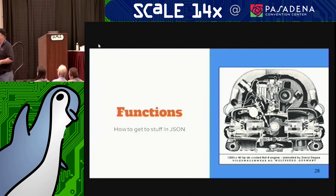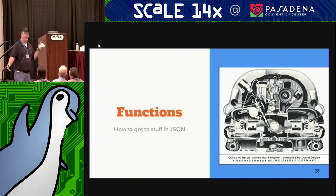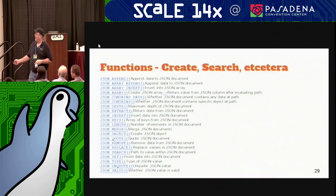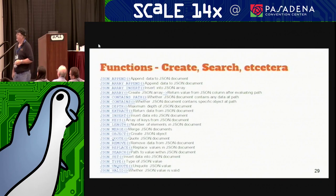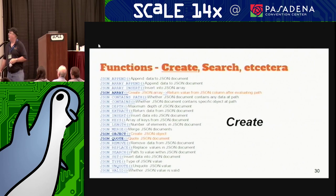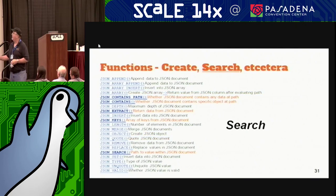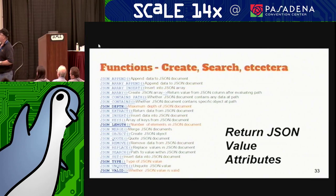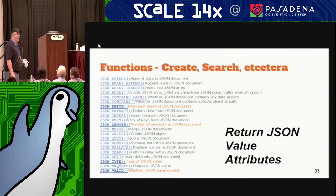Since you're breaking the first rule of data normalization and you basically have a file within a column, you need certain ways to dig down into that information. We have a whole slew of functions: some for creating JSON documents, some for searching, some for modifying, and a whole bunch to get JSON information like how deep the document is, how many items are in there, and so on.